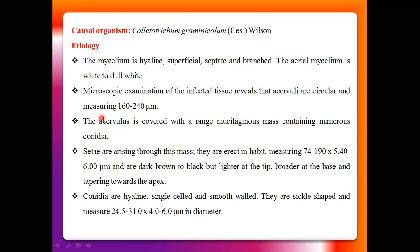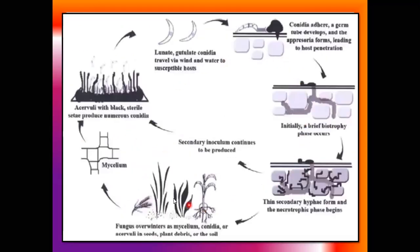The mycelia develops spore fruits known as acervuli. Acervuli are asexual spore fruits. You can see this disease cycle or life cycle of the anthracnose pathogen, Colletotrichum graminicola or graminicola.